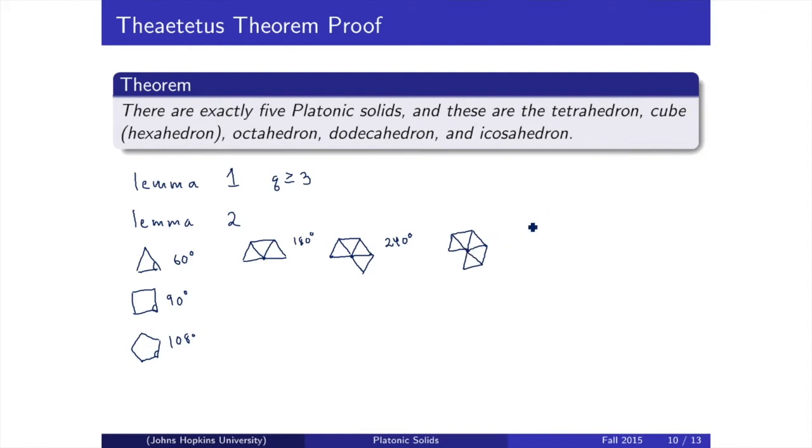When P equals 4, or when the faces are squares, we can have, at most, three faces around each vertex, because four faces will give us a sum of 360. When P equals 5, the interior angles are 108, and so there can be, at most, three faces around the vertex.